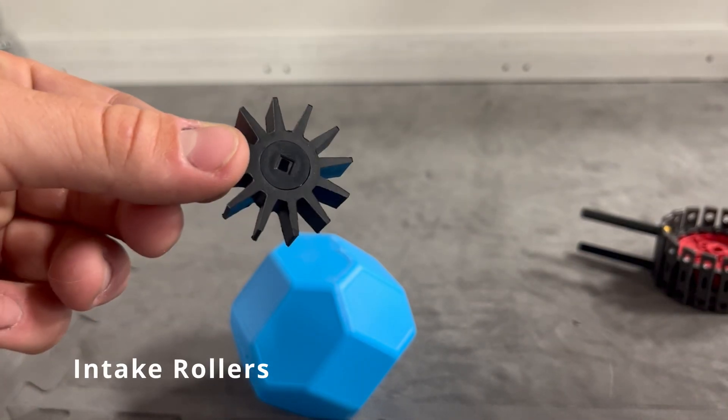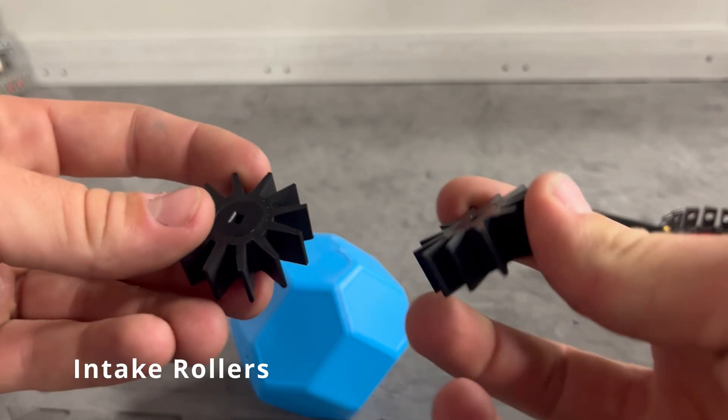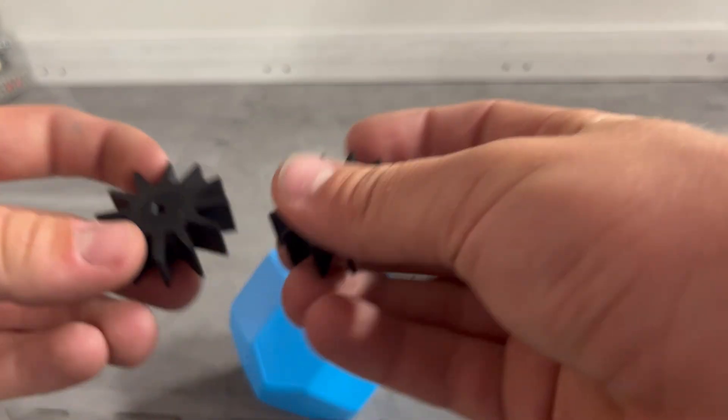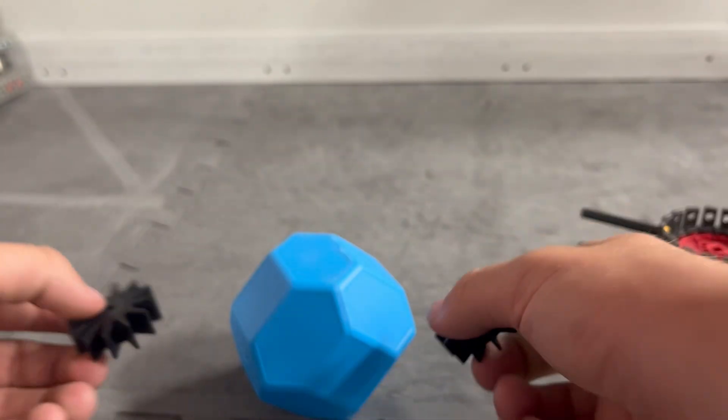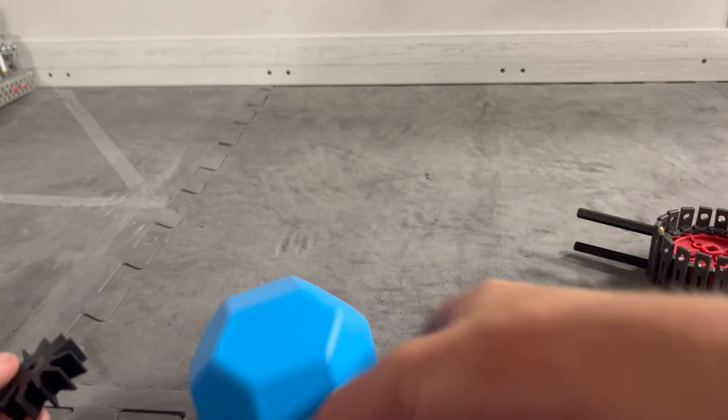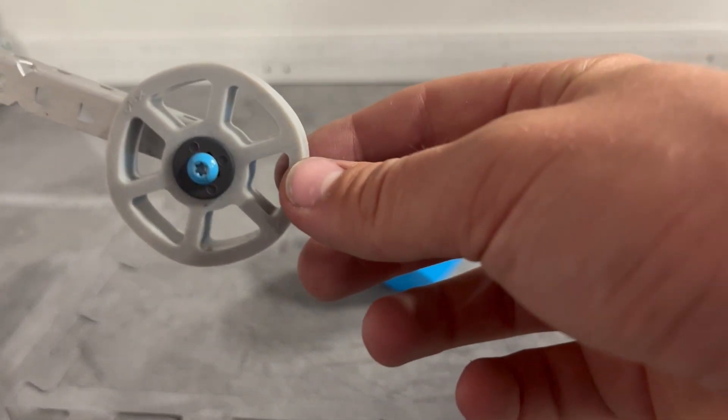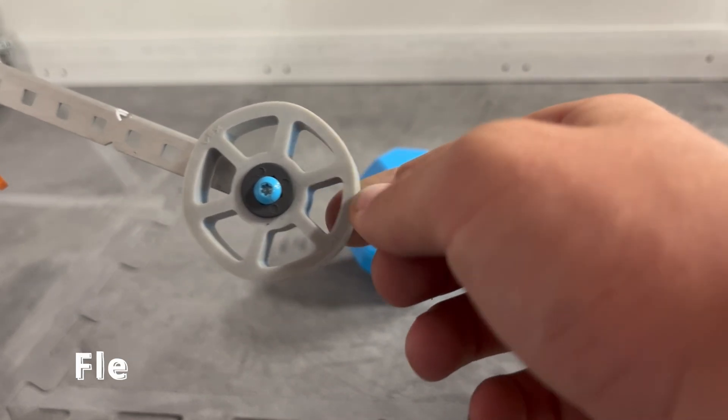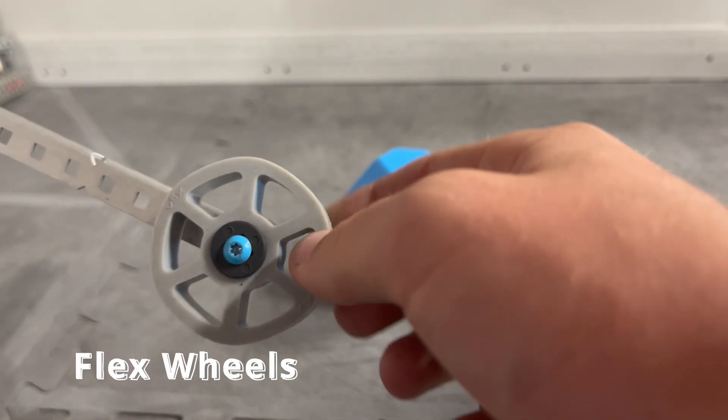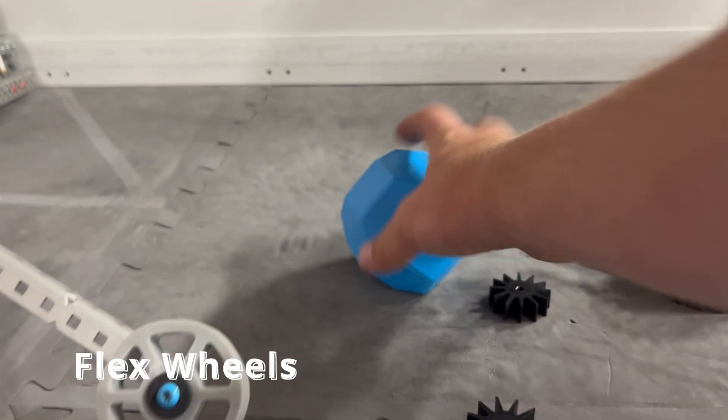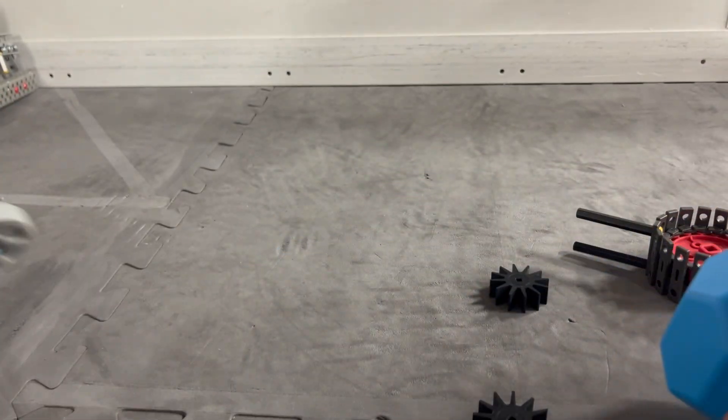Another thing that Vex actually sells are these little intake pieces. Now, I would warn you for these. I wouldn't go looking at buying these because they're a little bit too stiff, in my opinion, to get the ball well. I would actually, instead of those, get flex wheels and cut the outside part off of them. This is going to allow these inside pieces to cradle the ball and bring it in really efficiently.